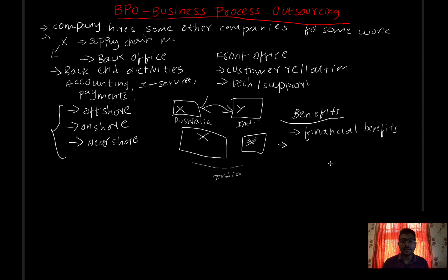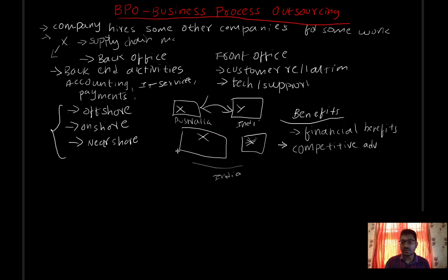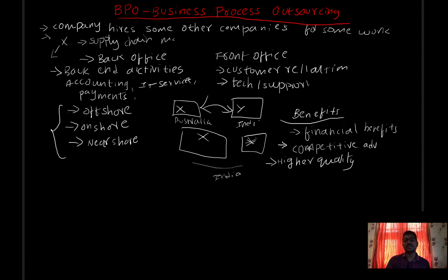The second benefit is competitive advantage. For example, if we develop a product and we outsource customer support, then we can focus on the core area — product development. We focus on the main areas and let the BPO handle support, accounting, and other tasks. This gives higher quality output. BPO companies bring front-end and back-end expertise, improving business quality and customer support.